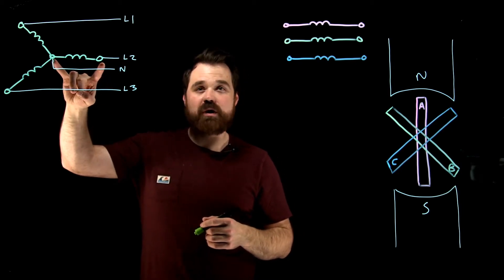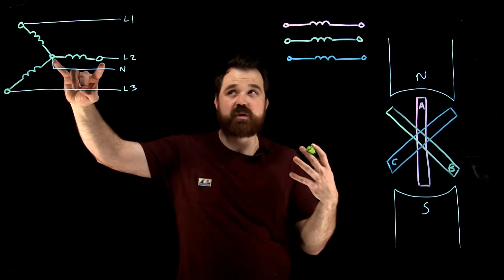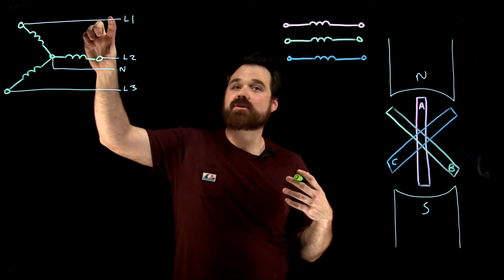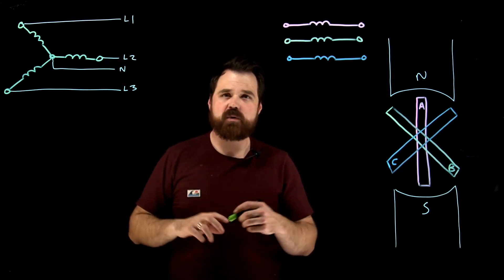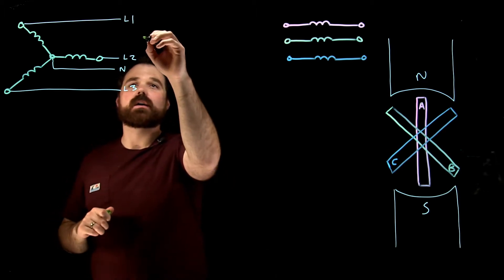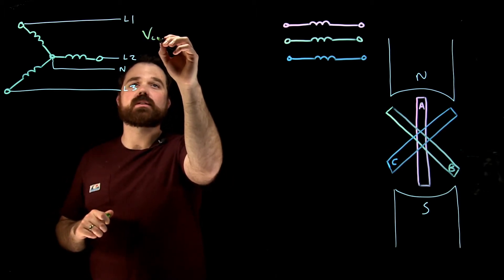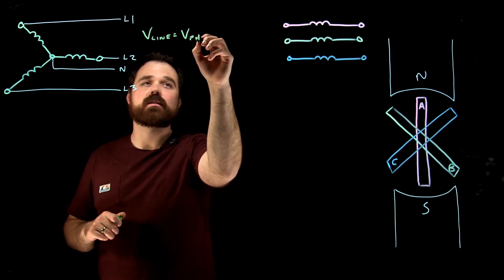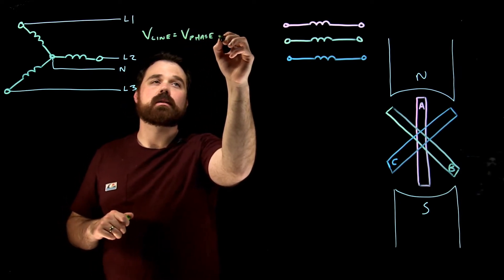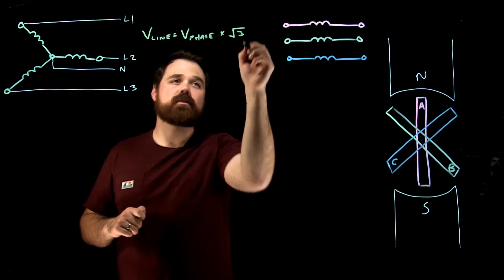The benefit here is I would have two voltages. My phase voltage across one winding would be 120 volts. But I would also have a line voltage, which would be root three larger. So I have, in this case, I would have a line voltage which equals my phase voltage times the square root of three.